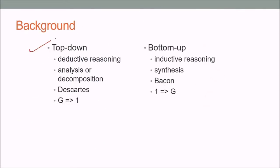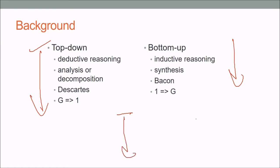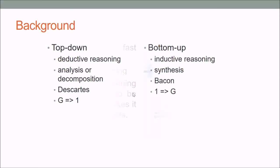The spiral model also incorporates the advantages of top-down and bottom-up concepts. Top-down is deductive reasoning — you do analysis and decomposition — while bottom-up is inductive reasoning — you do synthesis.